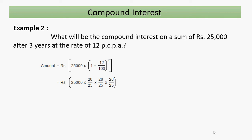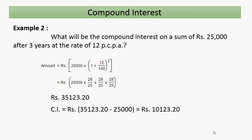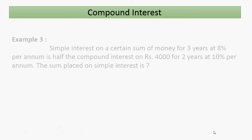Calculating: 25,000 × (28/25) × (28/25) × (28/25) gives us the amount rupees 35,123.20. The initial sum was 25,000, so the compound interest after three years is 35,123.20 − 25,000 = rupees 10,123.20.